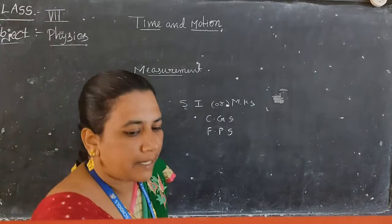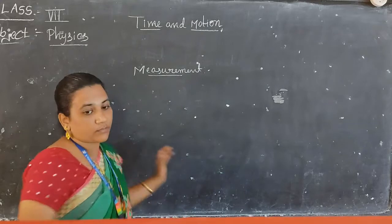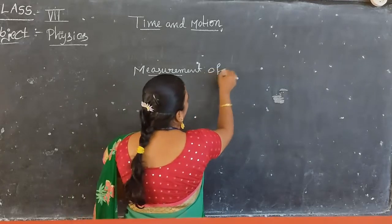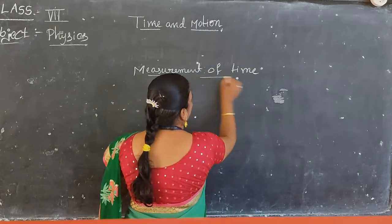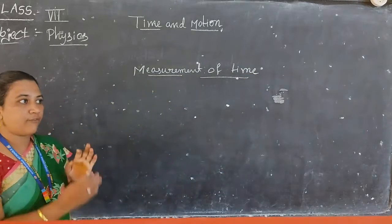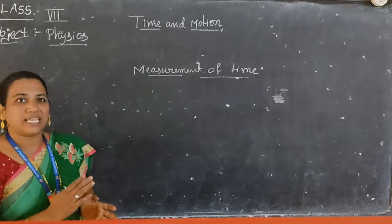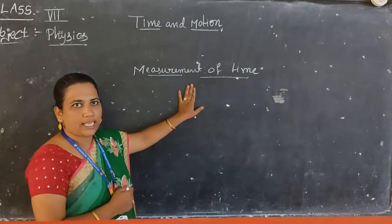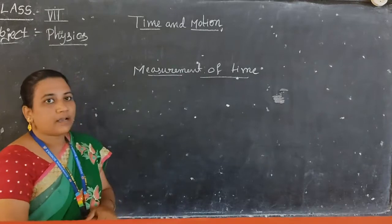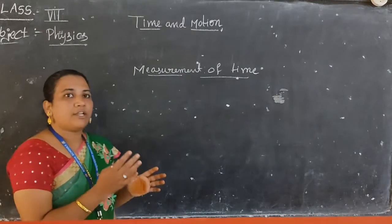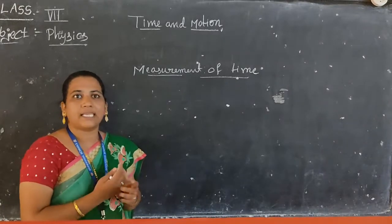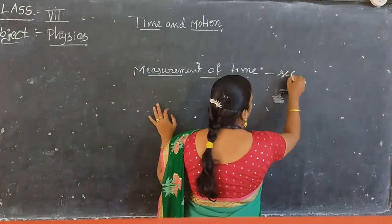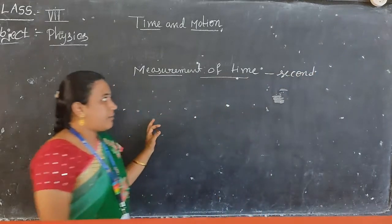Coming to the measurement of time. Time is a process by which we measure from one event to another event — from morning to evening, changes are happening. So measurement of time is very important. It is measured from one event to another event. The general SI unit of measurement of time is second.